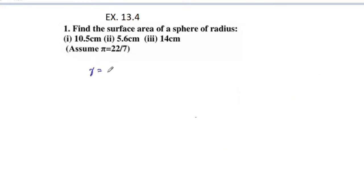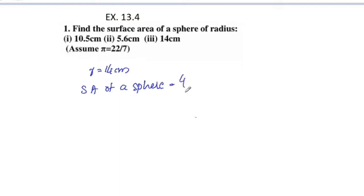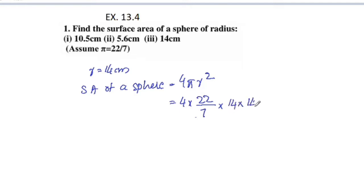Third part: r is equal to 14 centimeter. Surface area of a sphere is equal to 4 pi r squared, which is 4 into 22 by 7 into 14 squared.